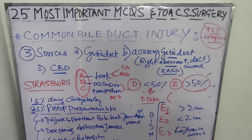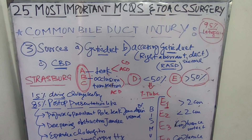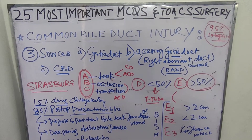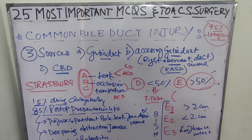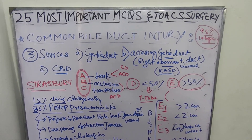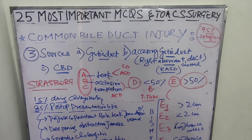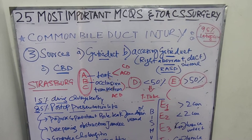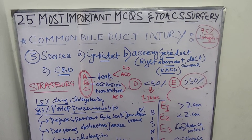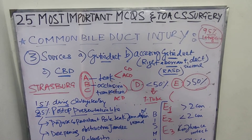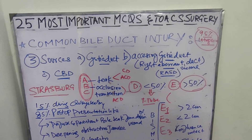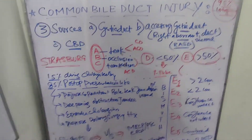A, B, and C are managed by observation or ERCP stenting. D type injury, which is lateral injury of the common bile duct, is repaired over a T-tube — importantly, the T-tube is passed through the lateral defect itself.